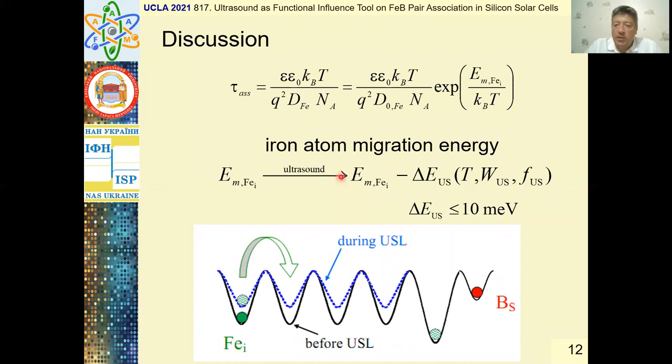It is known that association time depends on diffusivity of mobile Iron atom. Therefore, the most likely cause of the revealed effect is a decrease in Iron atom migration energy. After ultrasound action, the calculations show that this decrease is up to 10 millielectron volts.